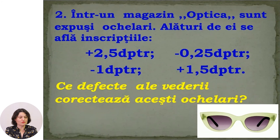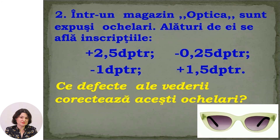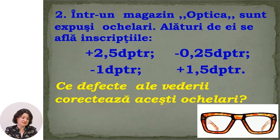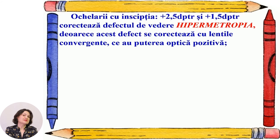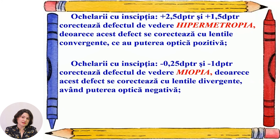Next situation: In an optics store, glasses are on display with the following labels: +2.5 diopters, −0.25 diopters, −1.0 diopters, and +1.5 diopters. Which vision defects do these glasses correct? Glasses labeled +2.5 diopters and +1.5 diopters correct hypermetropia, because hypermetropia is corrected with converging lenses, which have positive optical power. The glasses labeled −0.25 diopters and −1.0 diopters correct myopia, because myopia is corrected with diverging lenses, which have negative optical power.